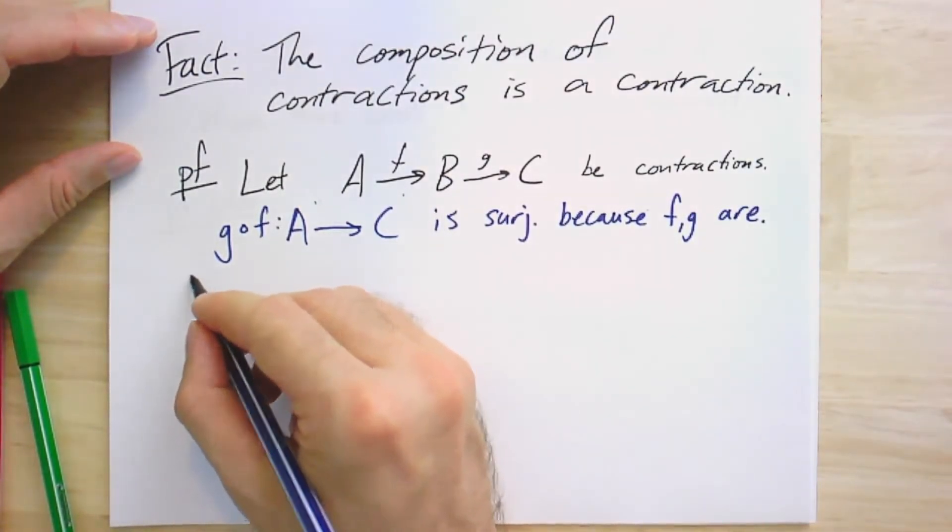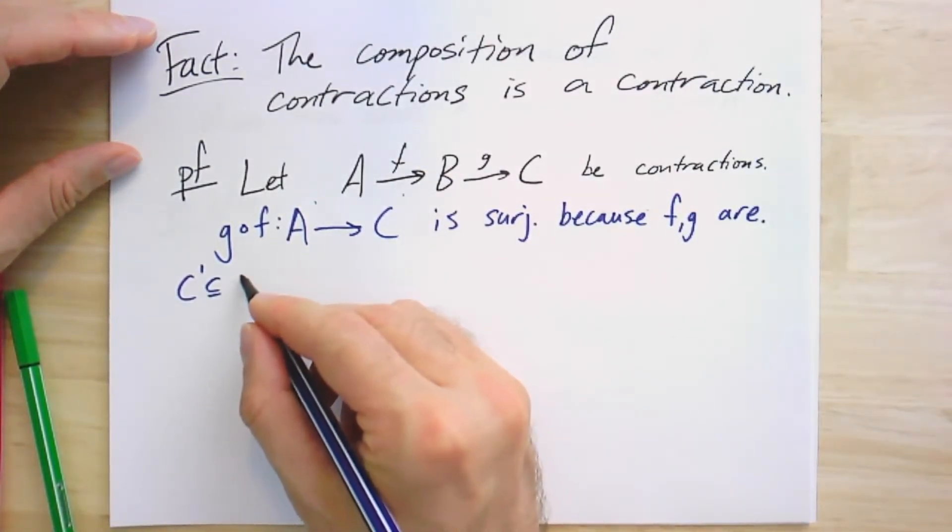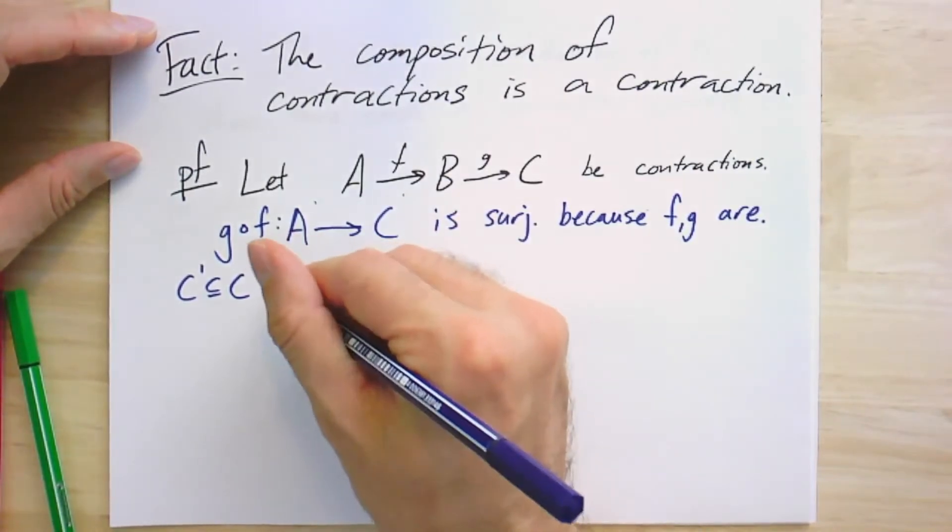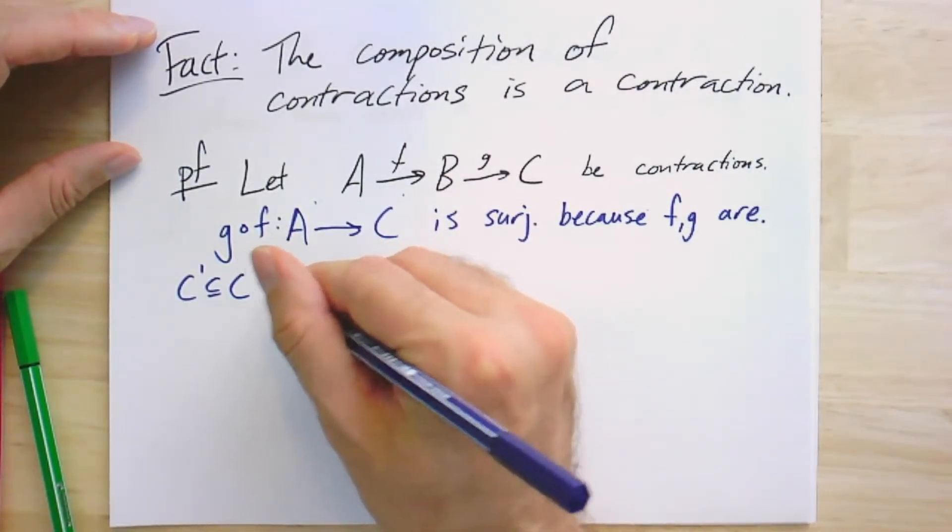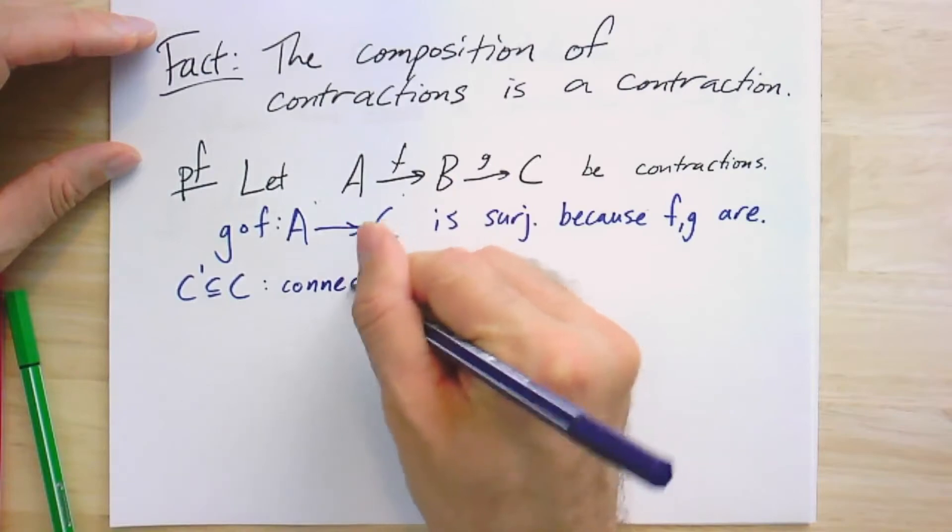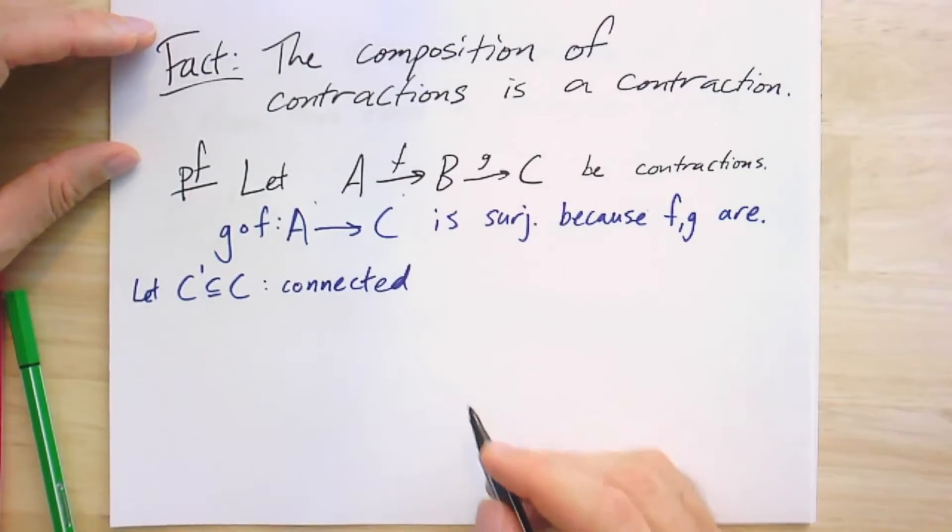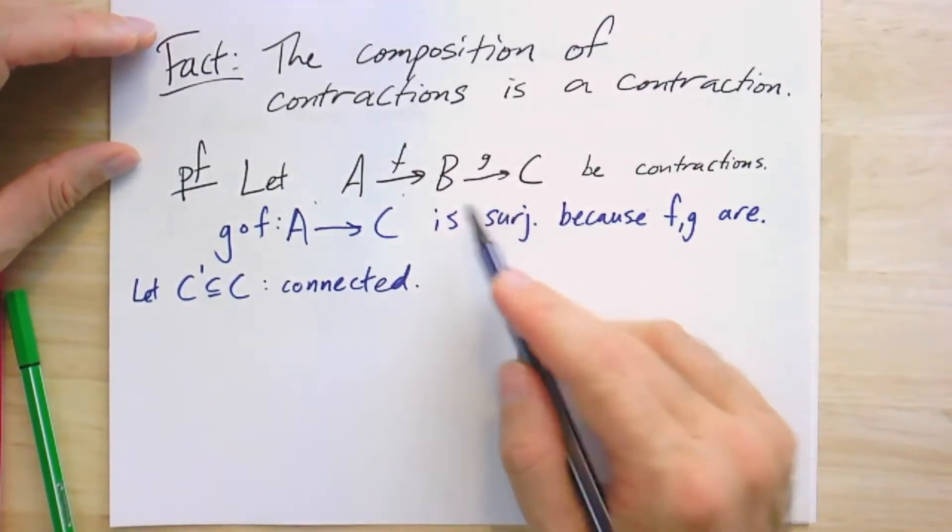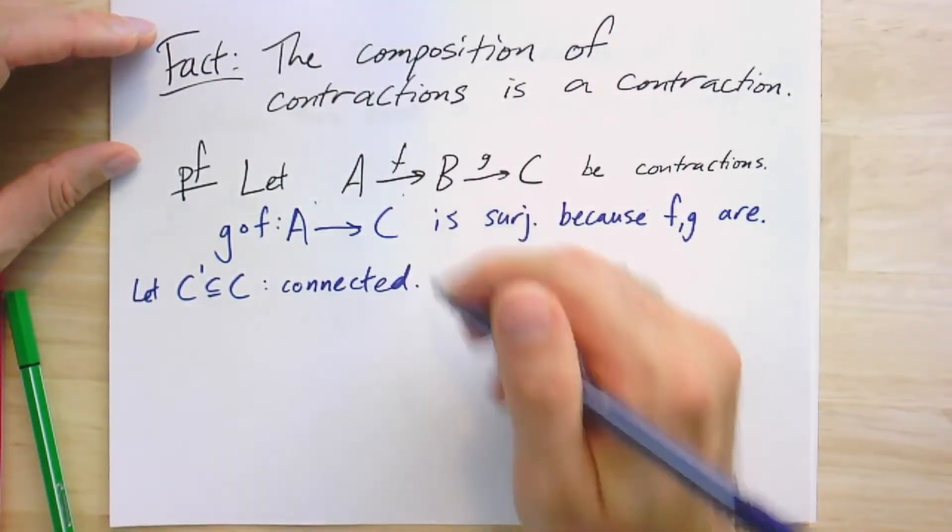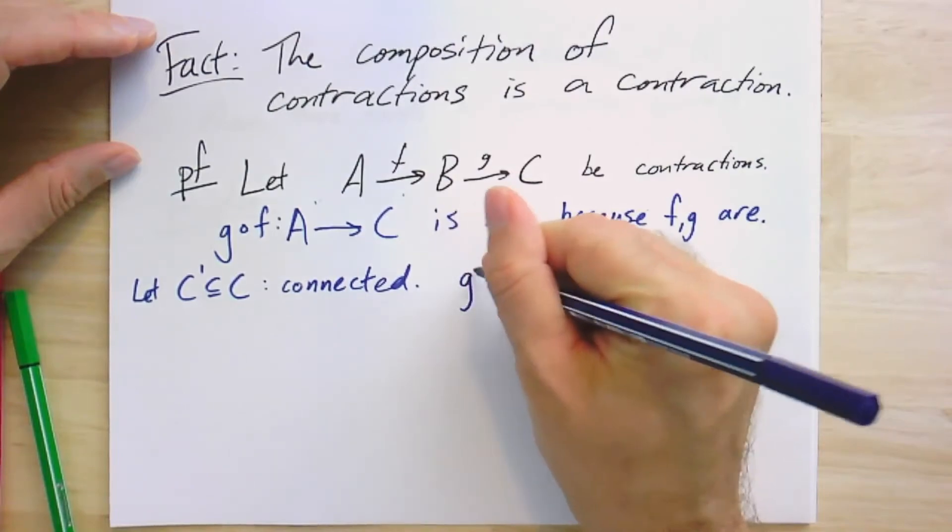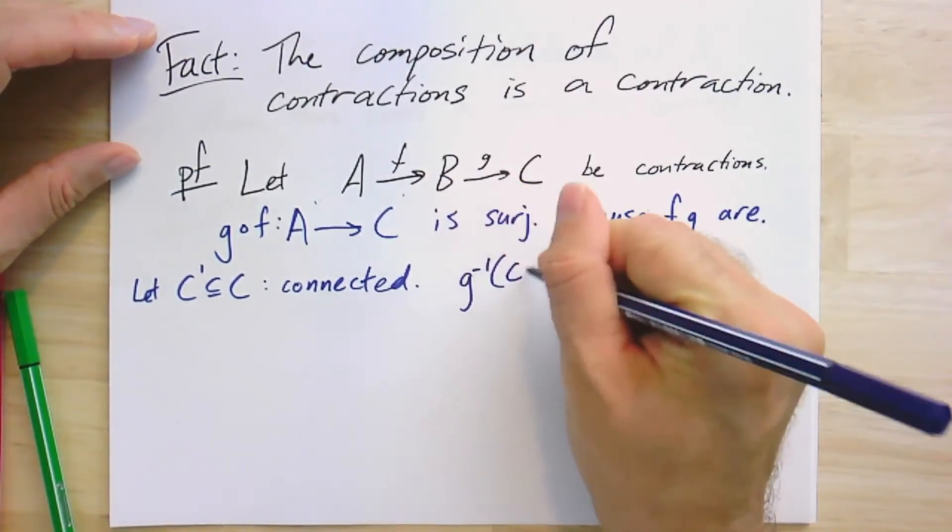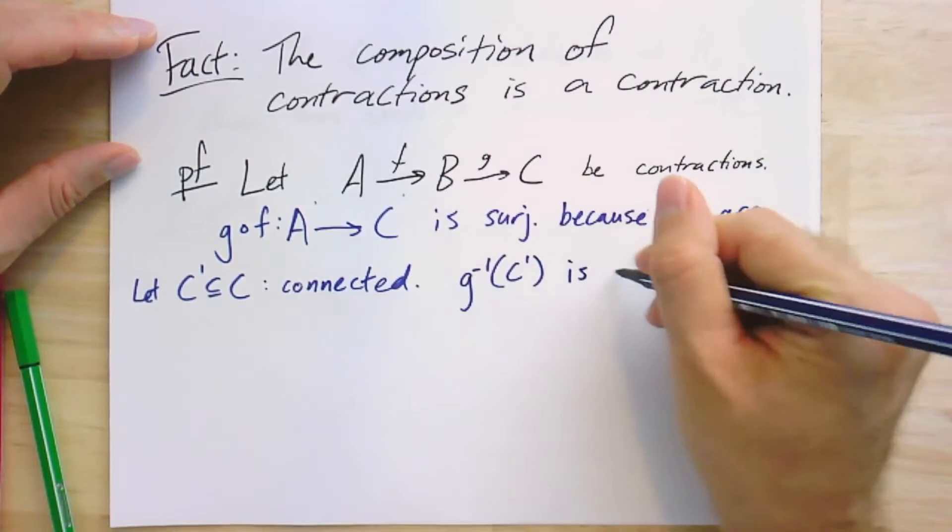And now if we take C prime, a subgraph of C, and it's a connected subgraph, then because G is a contraction, we know that the preimage of C prime is connected.